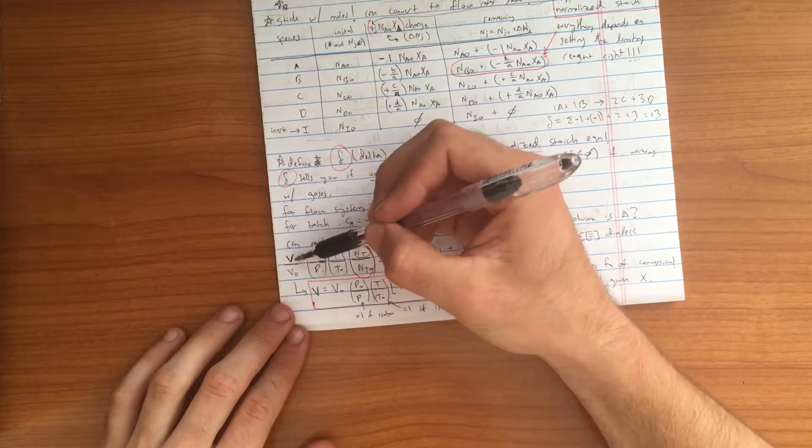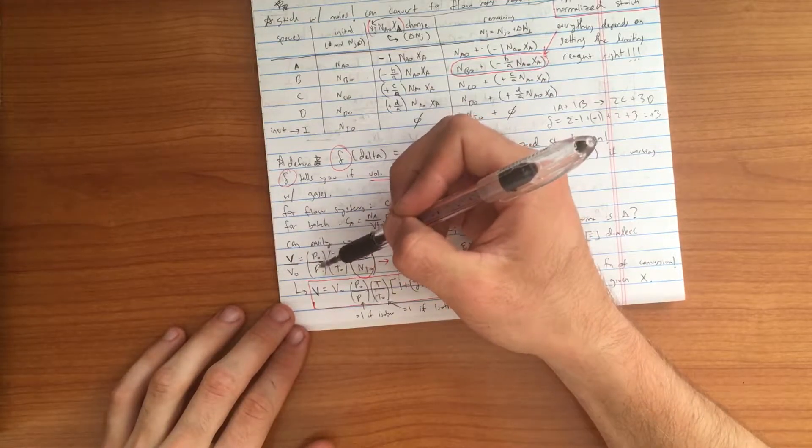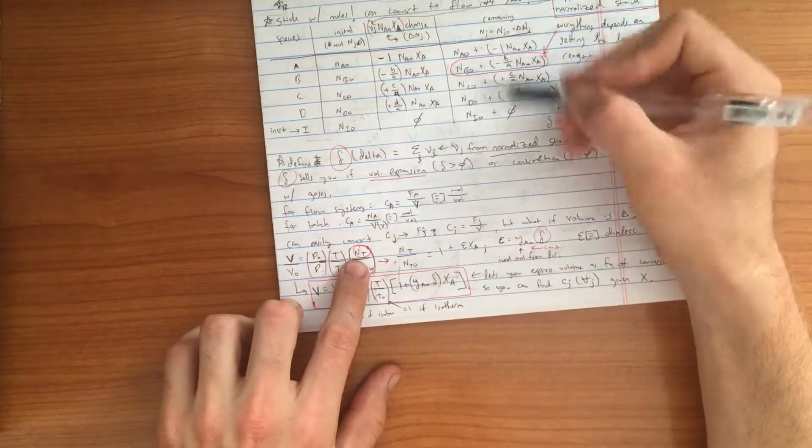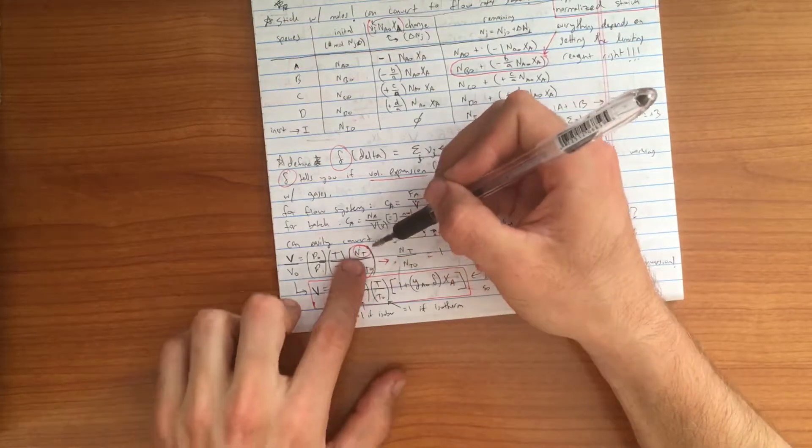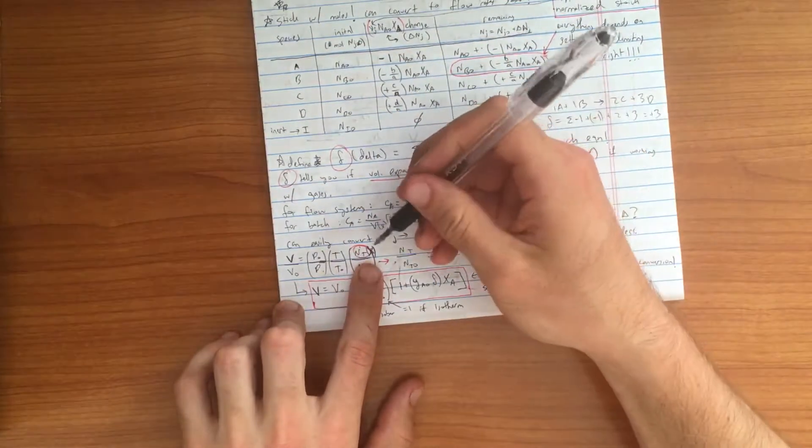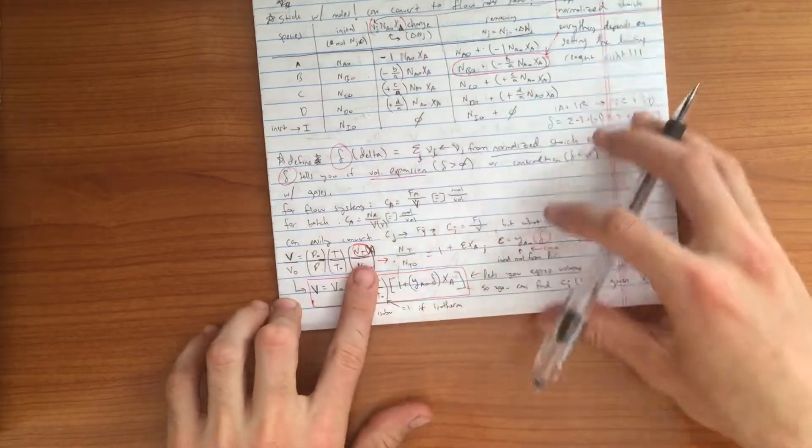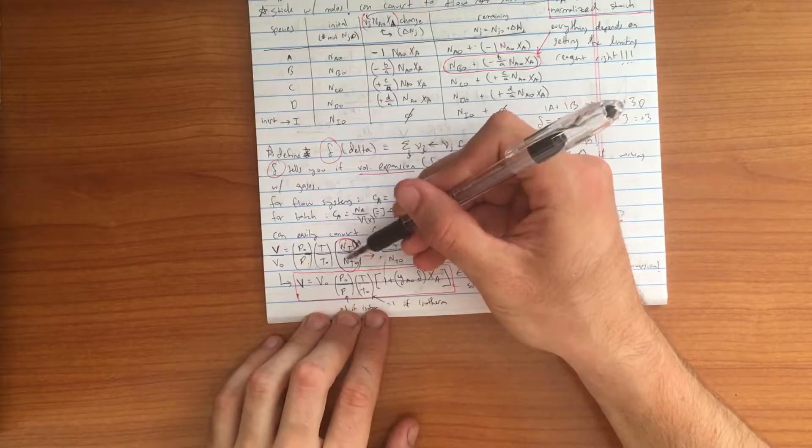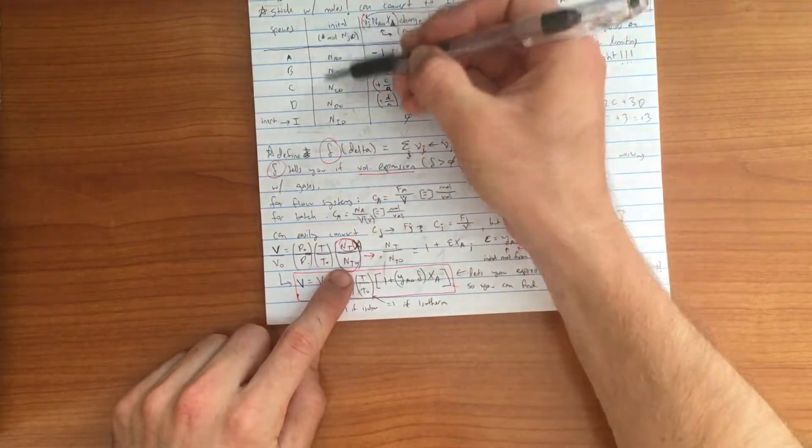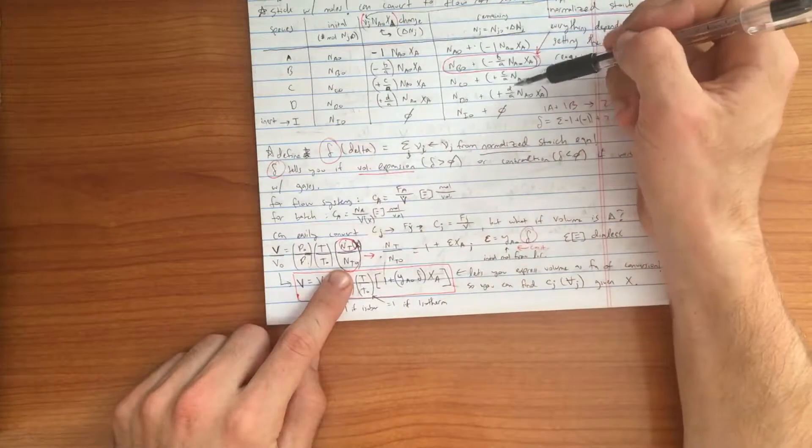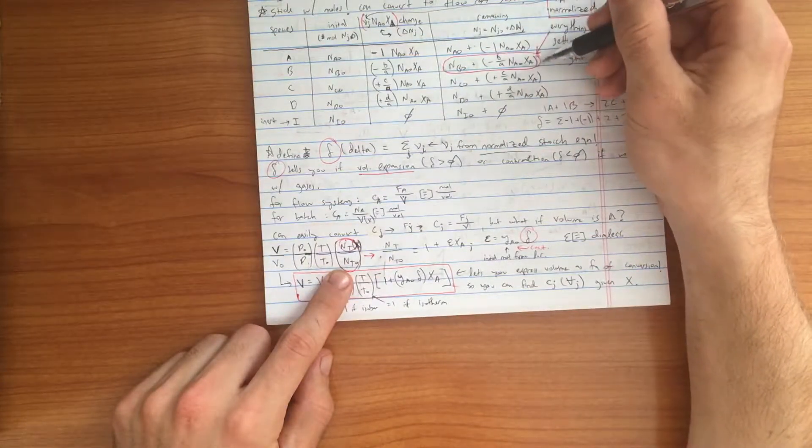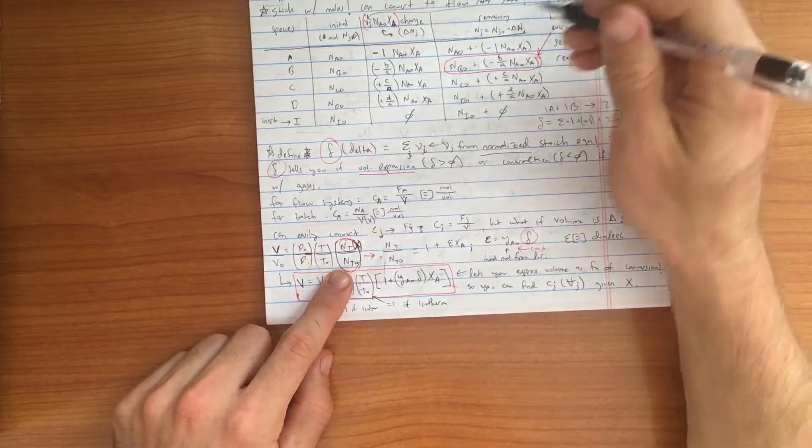What we do is we are using the ideal gas law. We are taking an adaptation of it, it is still the ideal gas law, but it tells us that the final volume over the initial volume is equal to the initial pressure over the final pressure times the final temperature over the initial temperature times the number of total moles in your system, N sub t as a function of x, so that's at a particular conversion, divided by the number of moles total initial. This NT naught would take into account everything here, including the inerts, and then NT takes into account everything here, and you'll notice that it is a function, so when you sum all these up, they are a function of the conversion.